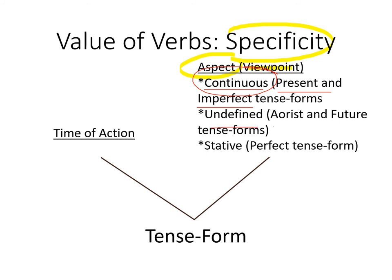Undefined: the aorist and future. Aorist is normally a past time idea — 'I walked.' The future: 'I will walk.' But both of those have an undefined aspect. That is, there is no continuous nature. We couldn't put an arrow by those. They are a fixed stop — 'I walked at some point in the past' or 'I will walk at some point in the future.' It's just an undefined action with no specificity about that action in a continuous kind of nature.